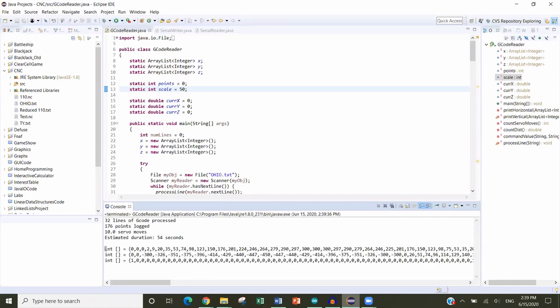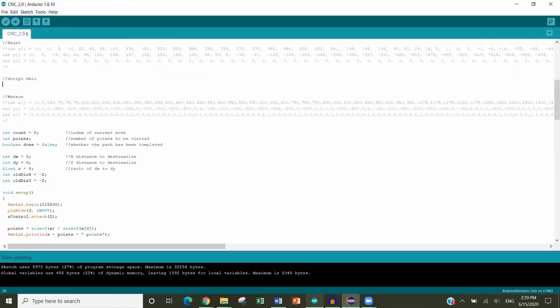We can then copy the array to the Arduino sketch, which iterates through and commands the CNC machine to visit the points in order.